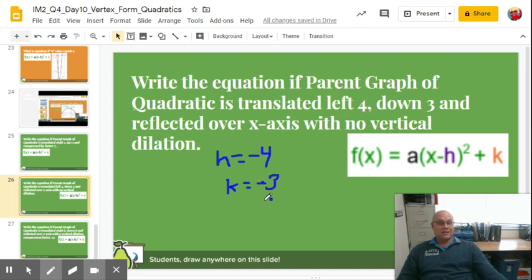Reflected over the x-axis tells me the a value is negative. And then no vertical dilation means that the a value is 1. So it's going to be negative 1 for the reflection.